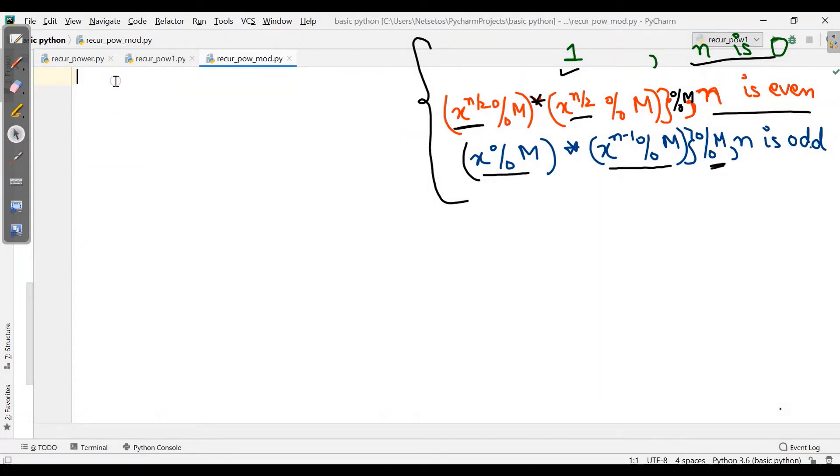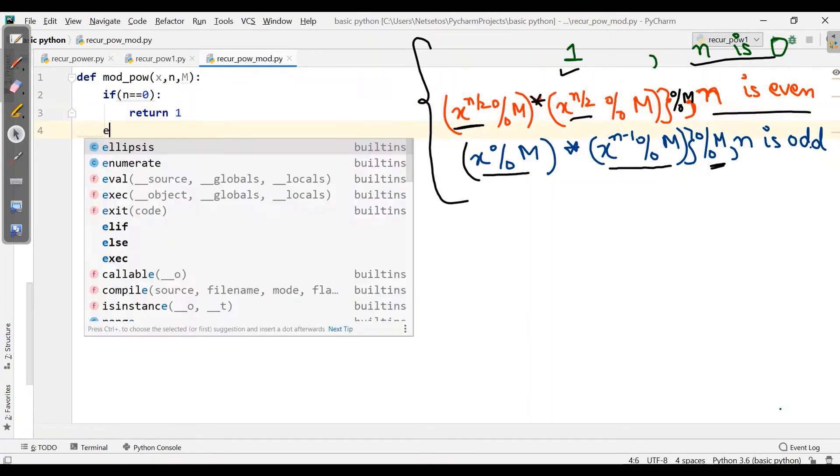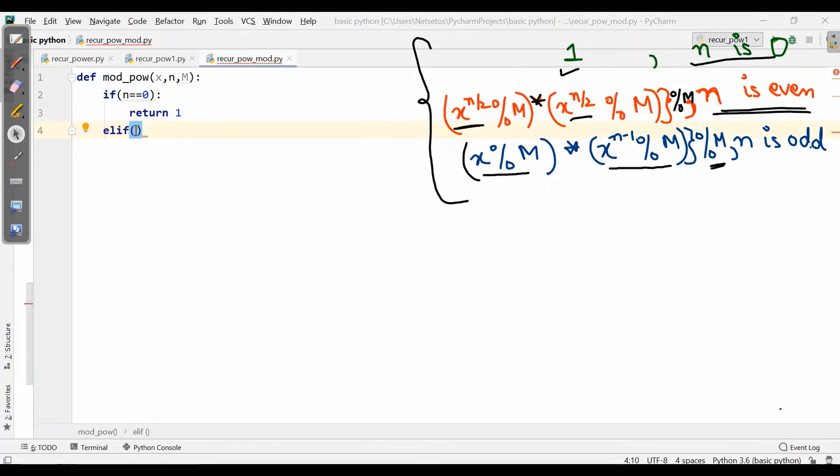Now we will make a new program with this where we will write def mod_power, and here I will take three variables which are x, n and then M. First we need to take a base condition, as base condition is very necessary for a recursive program where our program terminates. Now I will write if n is equal to 0, return 1.